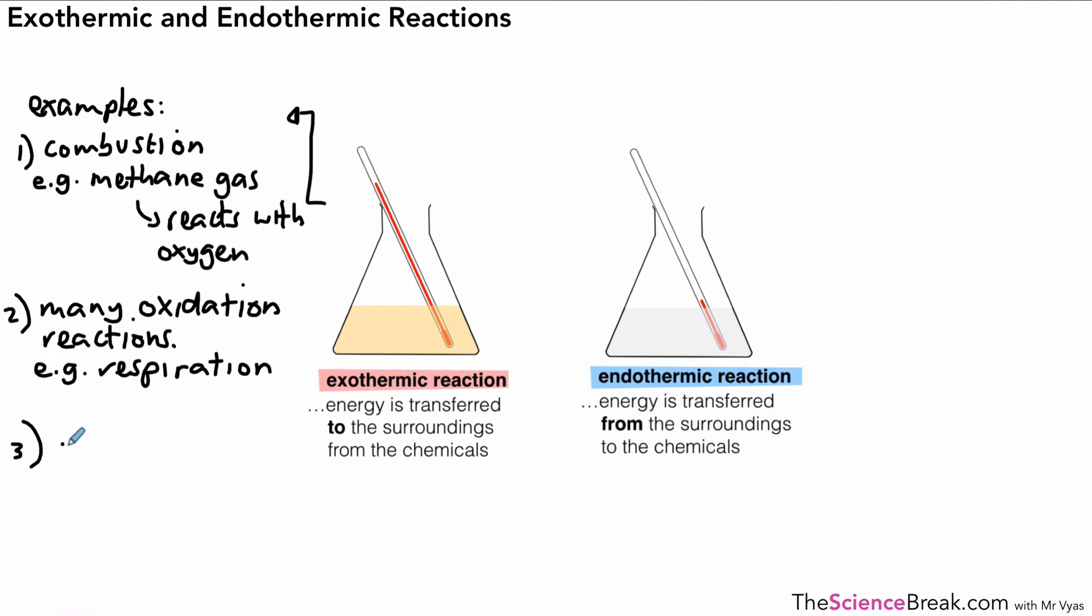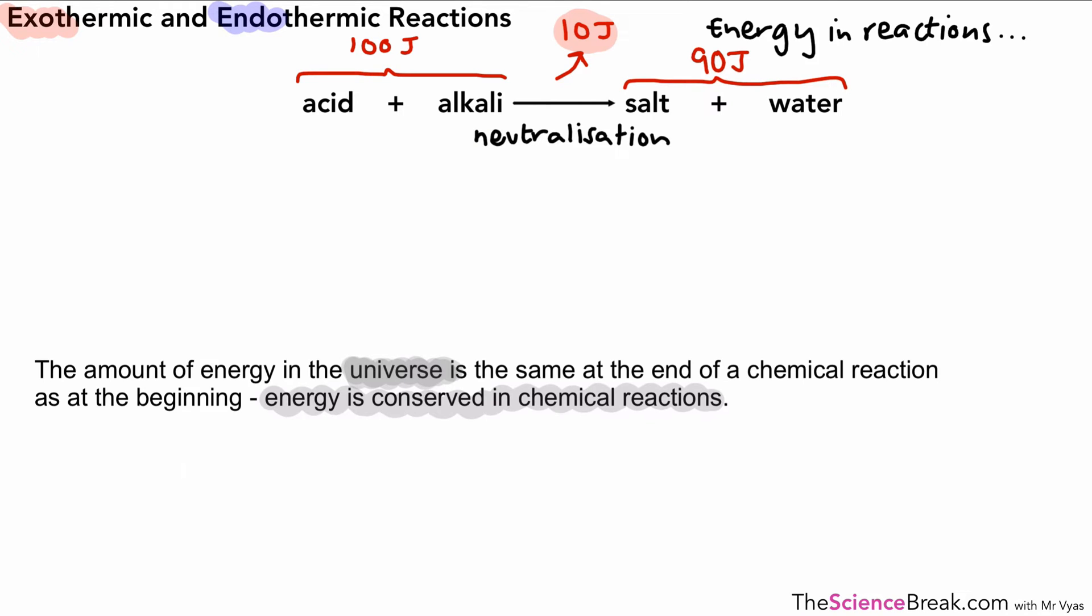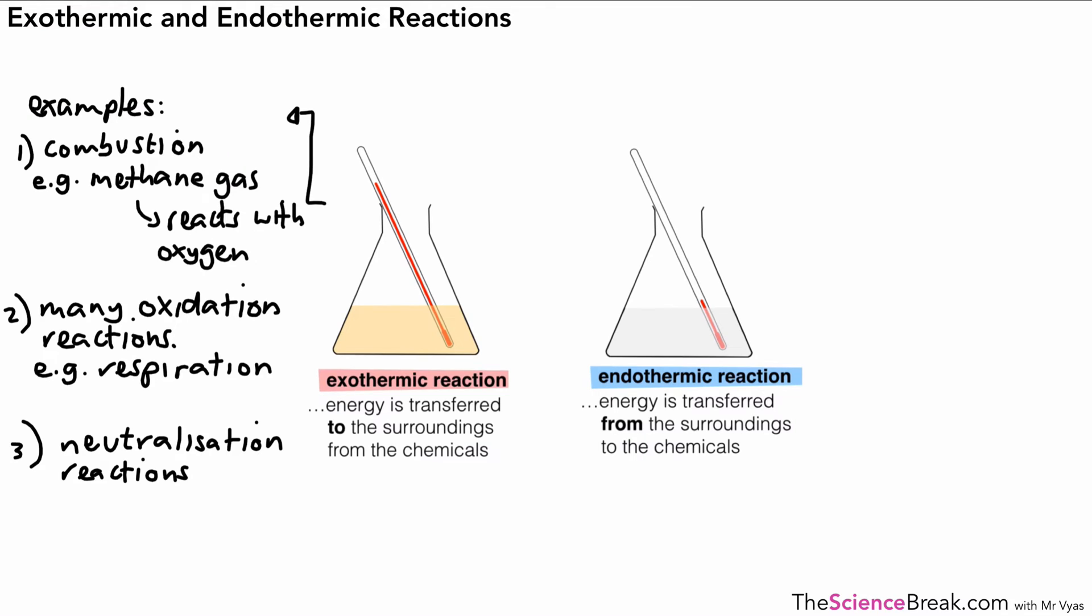We've got one more example that we need to know about and remember and that's neutralization. The neutralization reaction between acid and alkali and in fact the reaction that we looked at right at the beginning, this one here acid plus alkali, this is a neutralization reaction as we said and this is exothermic. So when we have acid plus alkali it's a neutralization reaction.